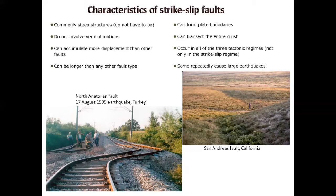This type of structure can occur in all three tectonic regimes, not only in the strike-slip situation. That means you can find strike-slip faults all over the world, in any tectonic setting — whether contractional, compressional, extensional, or a strike-slip transform boundary. You will be able to find strike-slip faults in any tectonic setting.